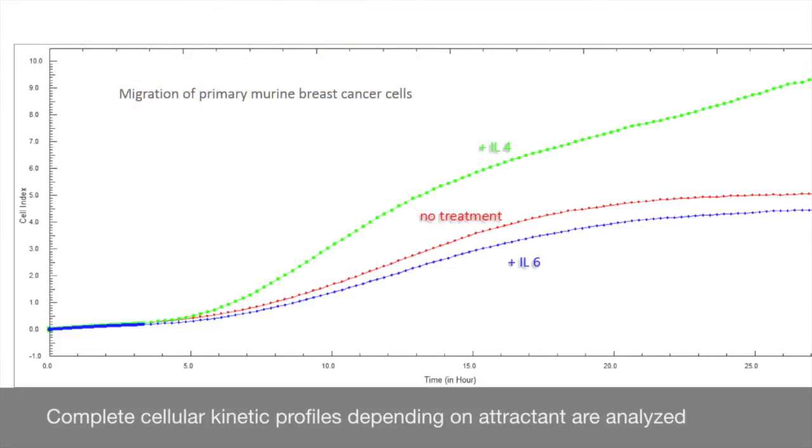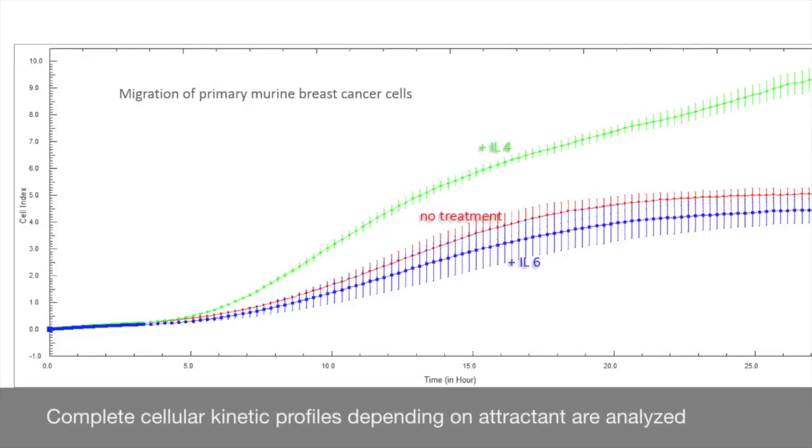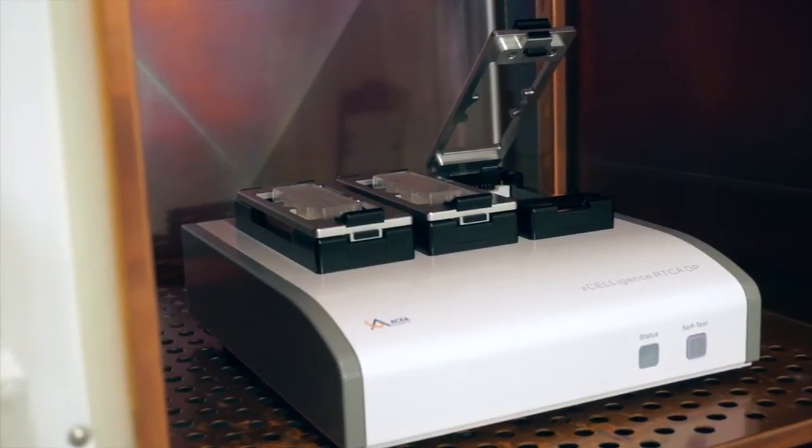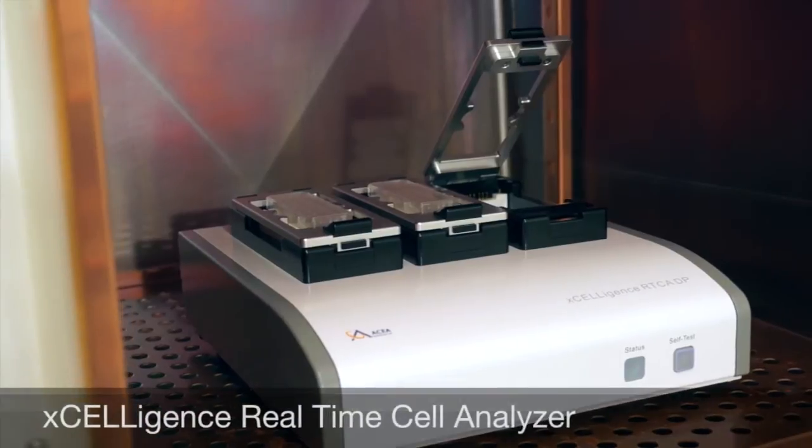Here the migration of cells is enhanced by adding IL-4 as chemoattractant to the wells of the bottom chamber and slightly diminished by IL-6. The Xcelligence Real-Time Cell Analyzer offers a straightforward workflow.